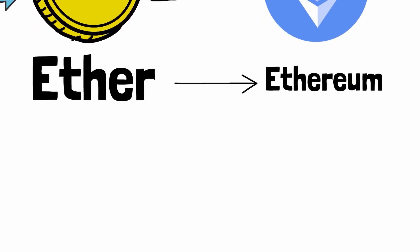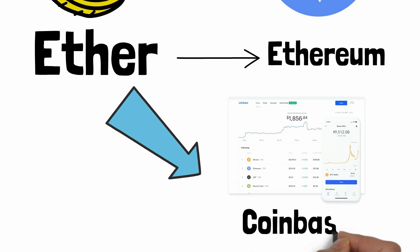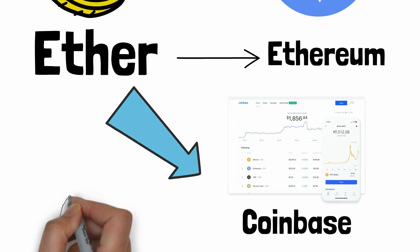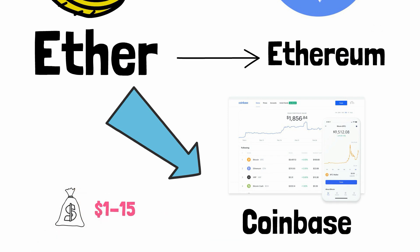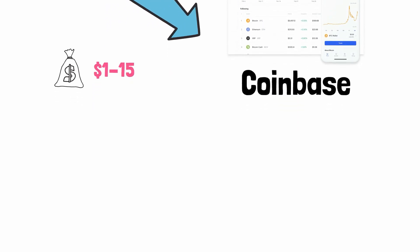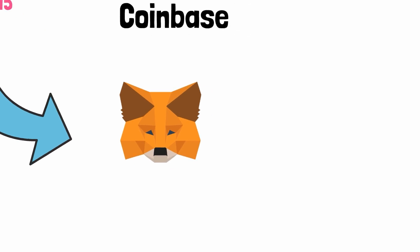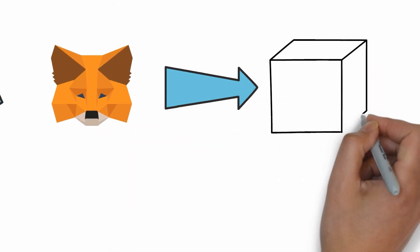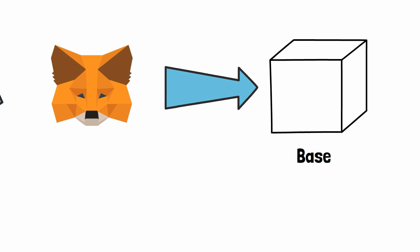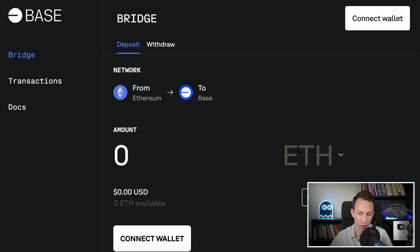The easiest way to purchase Ether is to go on a centralized exchange like Coinbase, where you can pay with real money. To deploy a token, you will need anywhere between $1 to $15 in Ether. This can change depending on market conditions. You also need some Ether for the initial liquidity, which I will explain in more details later. Once you have purchased your Ether, you have to send it to your MetaMask wallet. And after that, you will need to transfer this Ether to the Base network. The Ether will still belong to you on the same address, but it will be on the Base network. To do this conversion, I recommend using the official bridge of Base.